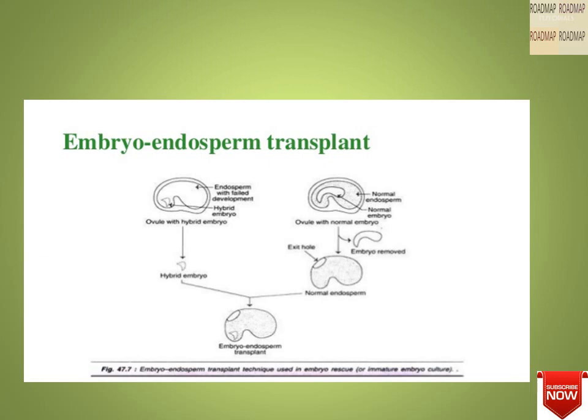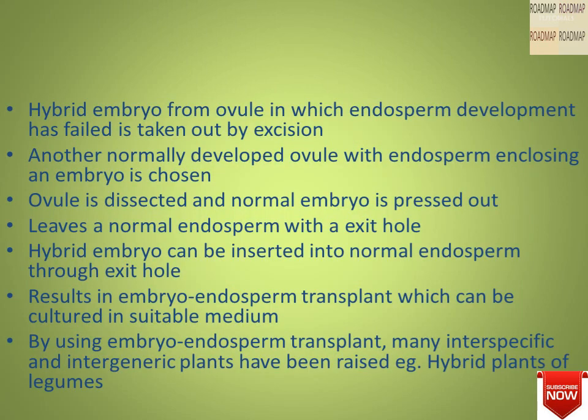From the figure you can see how the embryo endosperm transplant is done. A hybrid embryo from an ovule in which the endosperm development has failed is taken out by excision. Another normally developed ovule with endosperm enclosing an embryo is chosen. The ovule is dissected and the normal embryo is pressed out, leaving a normal endosperm with an exit hole. The hybrid embryo is then inserted into the normal endosperm through the exit hole. This results in the embryo endosperm transplant, which can be cultured in a suitable medium.